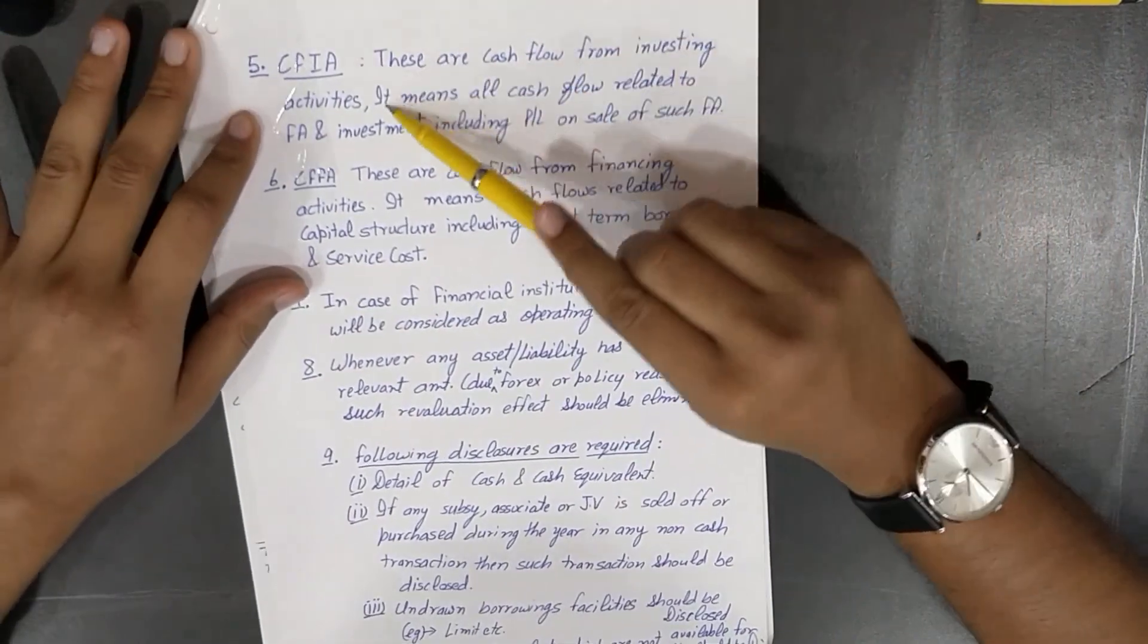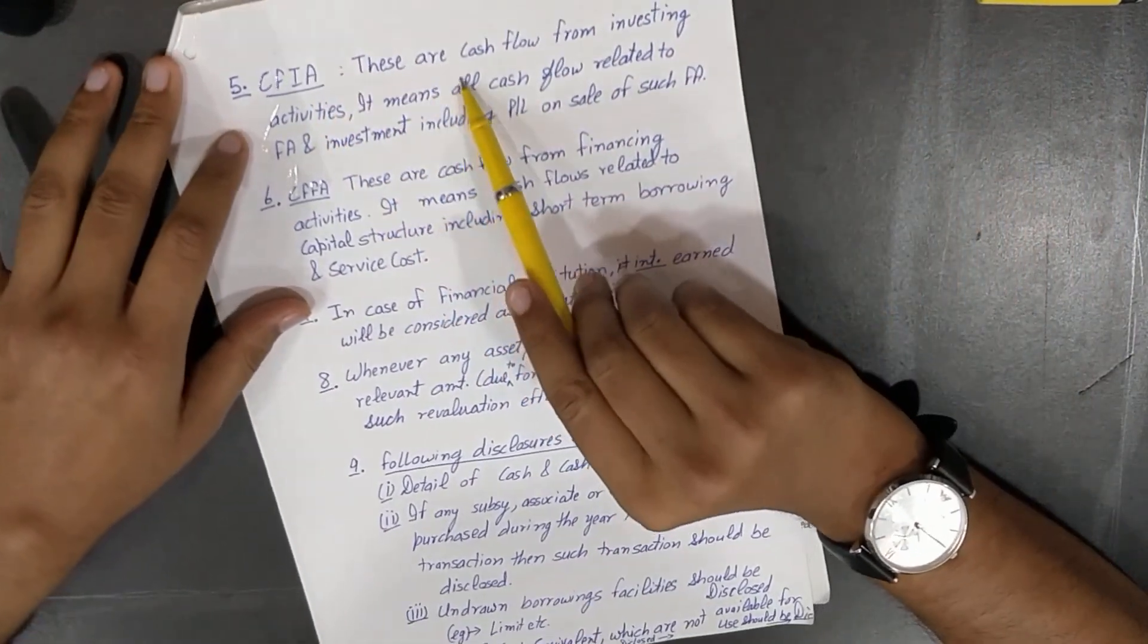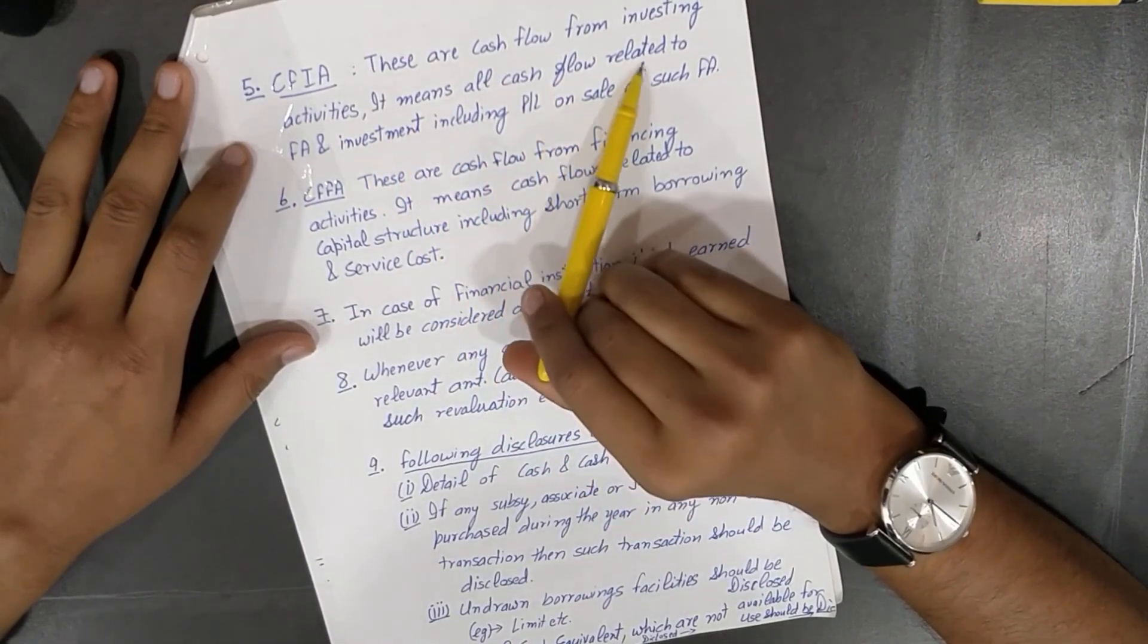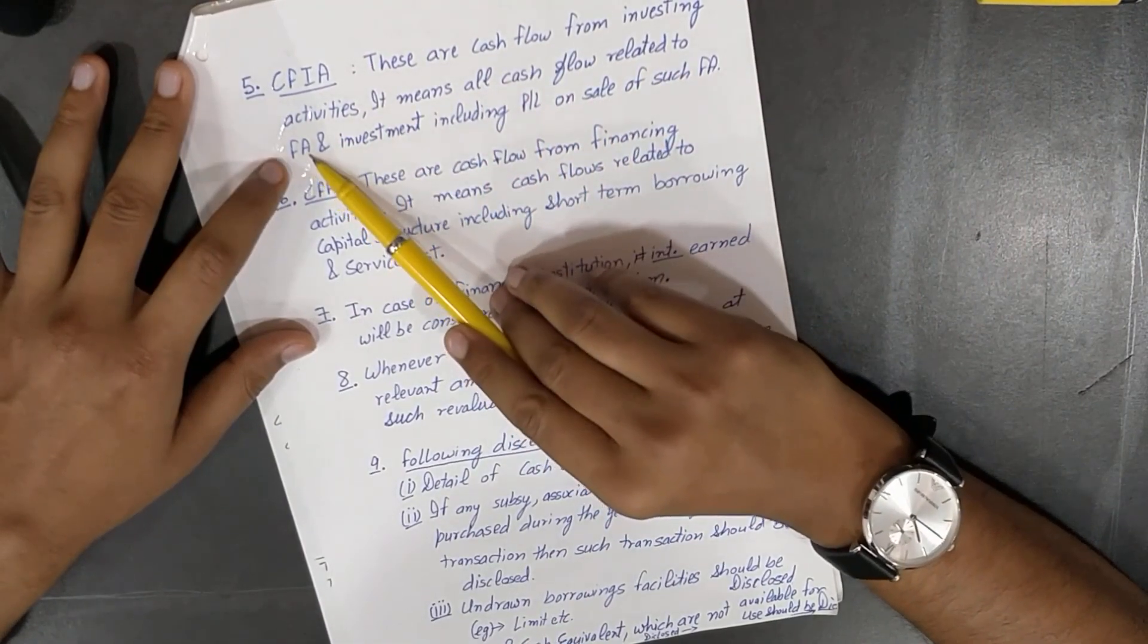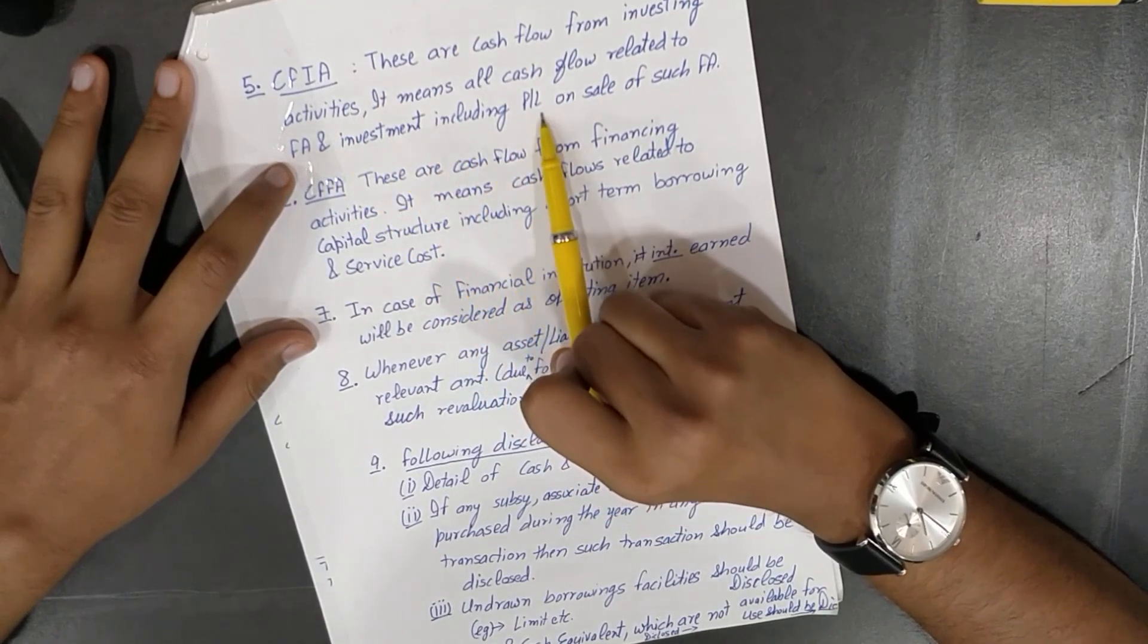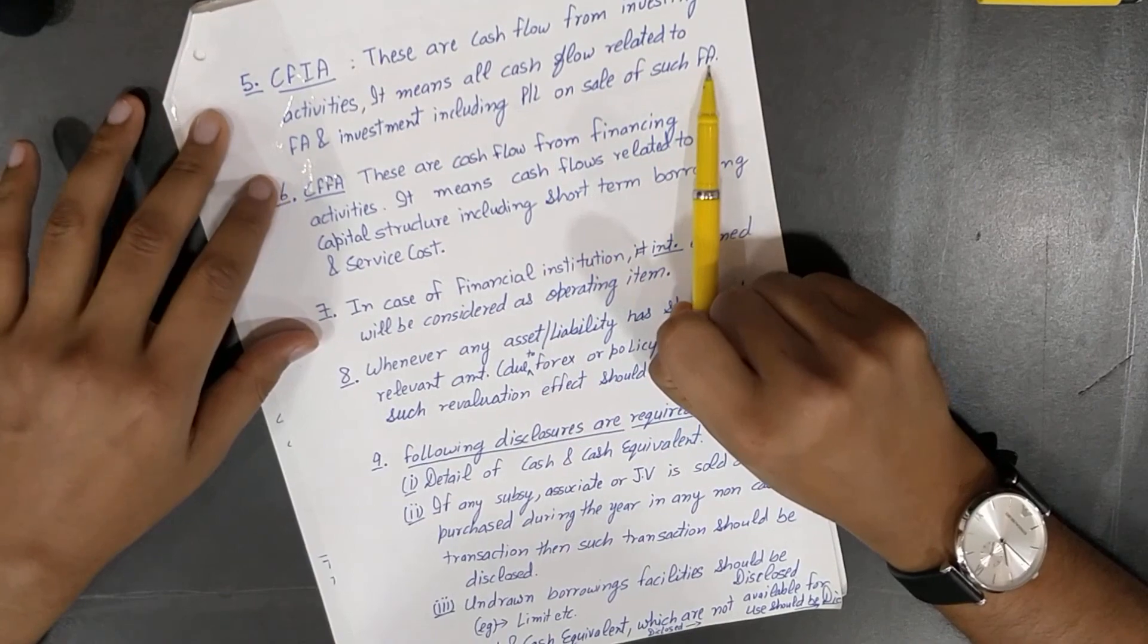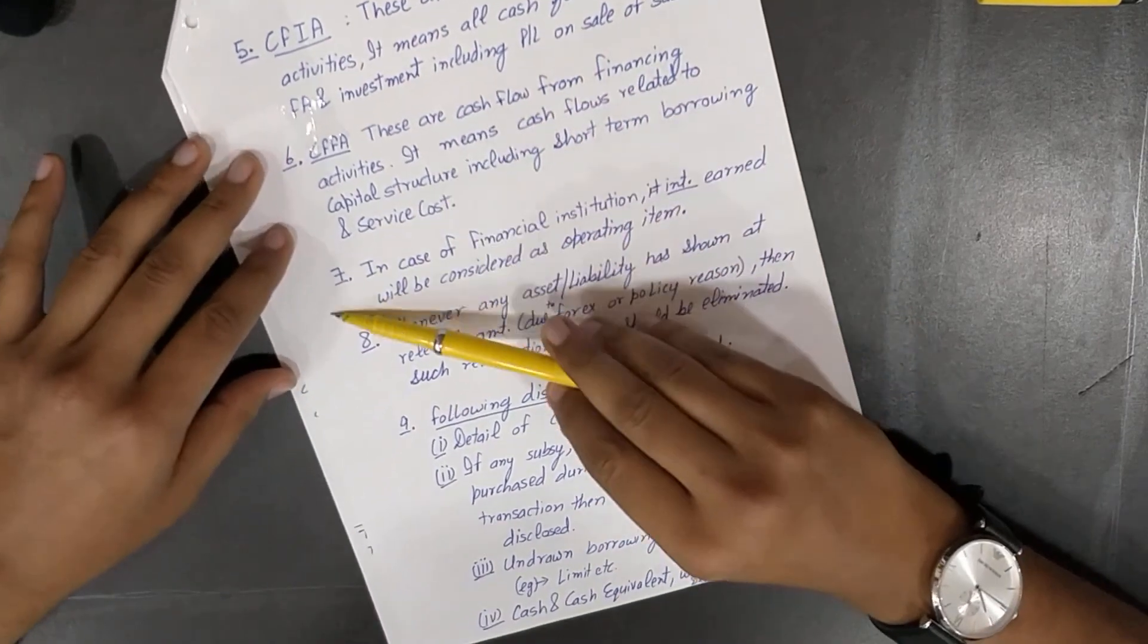Cash flow from investing activities: these are cash flows from investing activities. It means all cash flow related to fixed asset and investment, including profit and loss on sale of such fixed asset.